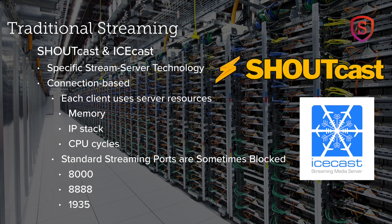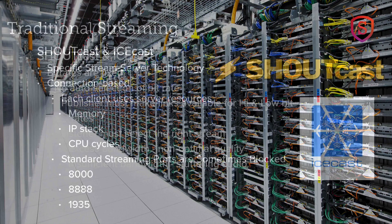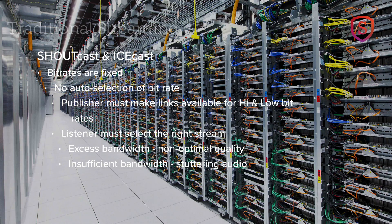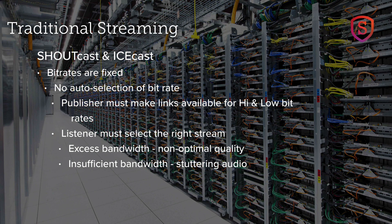Common ports used for streaming — like port 8888 or port 1935 — are often blocked. Also, with traditional streaming like Shoutcast and Icecast, bitrates are fixed. There's no auto-selection of the bitrate. The publisher — that is, you — has to make links available for high, low, and medium bitrates for the listener to choose from.